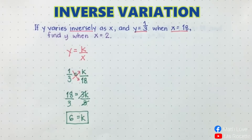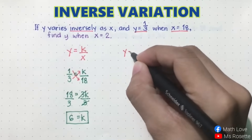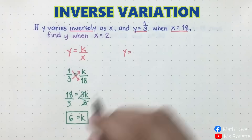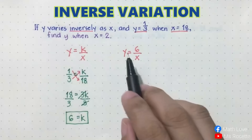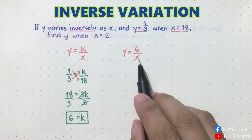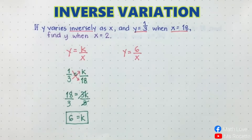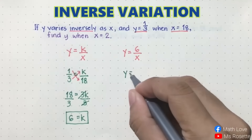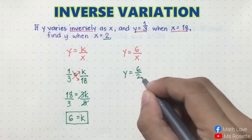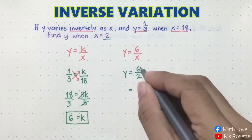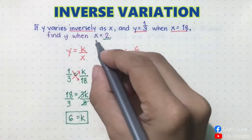Now we will use k equals 6 to rewrite the equation. So y is equal to 6 over x. Now substitute to find y when x is equal to 2. y equals 6 over 2. Simplifying, 6 divided by 2 equals 3. So y is equal to 3 when x is equal to 2.